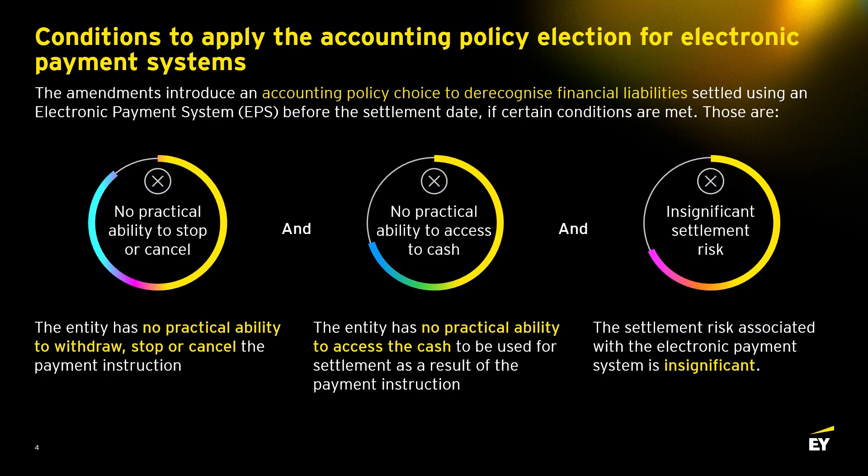Marek, are there specific requirements to call out regarding how the amendments will be applied in practice? The accounting policy election for electronic payment systems is intended to be a practical exemption from the normal de-recognition requirements. If entities choose to make the election, the corresponding financial liabilities can be de-recognized before the settlement date once three criteria are met: the entity has no practical ability to withdraw, stop or cancel the payment instruction; the entity has no practical ability to access the cash to be used for settlement; and the settlement risk associated with the electronic payment system is insignificant.